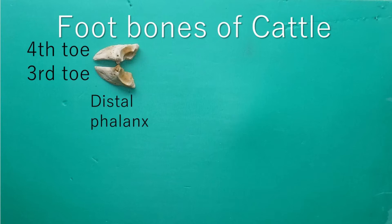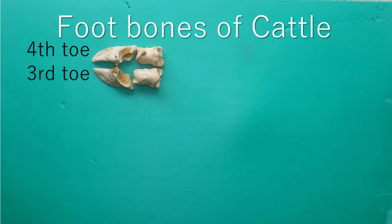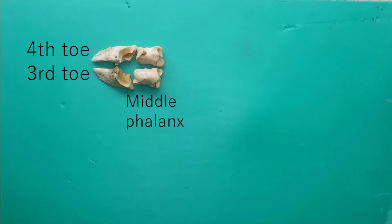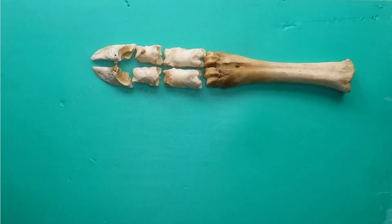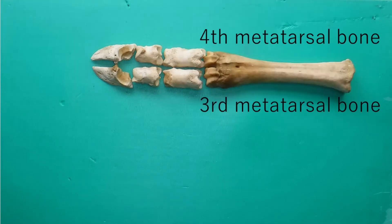Cattle is even-toed and bears its weight equally on two toes: the third and the fourth. The third and the fourth metatarsal are fused.